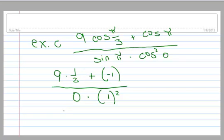So 9 times 1 half, I can just write that as 9 halves, minus 1, all over, well, 0 times 1 squared is going to be 0. And look here, I'm trying to divide by 0. I can't divide by 0. So therefore, we say that this is undefined.